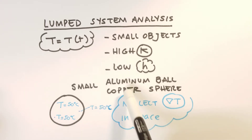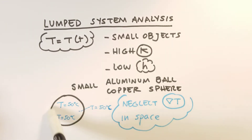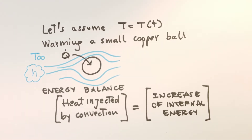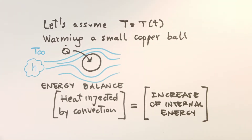For example, cases where we have a small aluminum ball or a small copper ball. We have a schematic here: a small object whose temperature, for example, is 50°C at a certain time. We can approximate the temperature to be 50°C everywhere — on the surface of the sphere and also inside — so we neglect the temperature variation in space. Let's look at this case in more detail. We have, for example, a small copper ball, and this cold small copper ball is immersed in a fluid in motion.